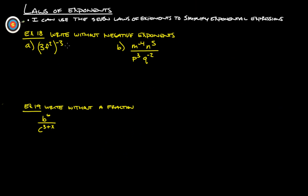Example 18, write without negative exponents. This 3 needs a power of 1 because we distribute this negative 3 to each power. So 3 to the 1 times negative 3 is negative 3, and f — 2 times negative 3 is negative 6. We turn this into 1 over 3 cubed times f to the 6th. You could also write it as 1 over 27f to the 6th.